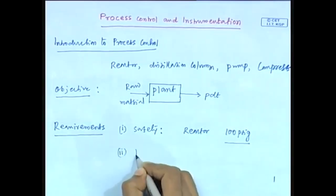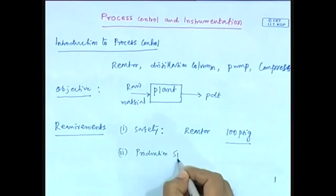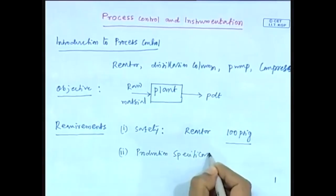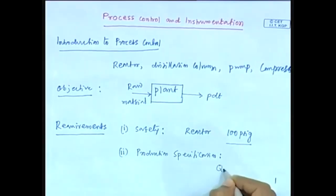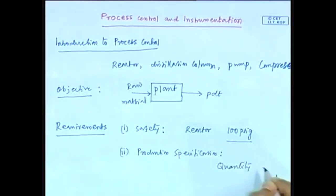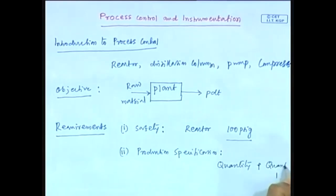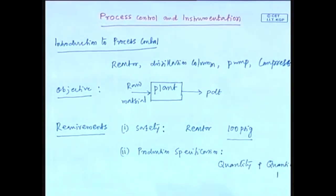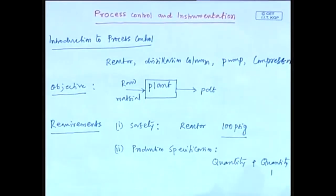The second requirement is production specification. A process must produce desired amounts of product and desired quality of product. So, first one is quality and second one is quantity — that is the product specification. We need to maintain both quantity and quality.